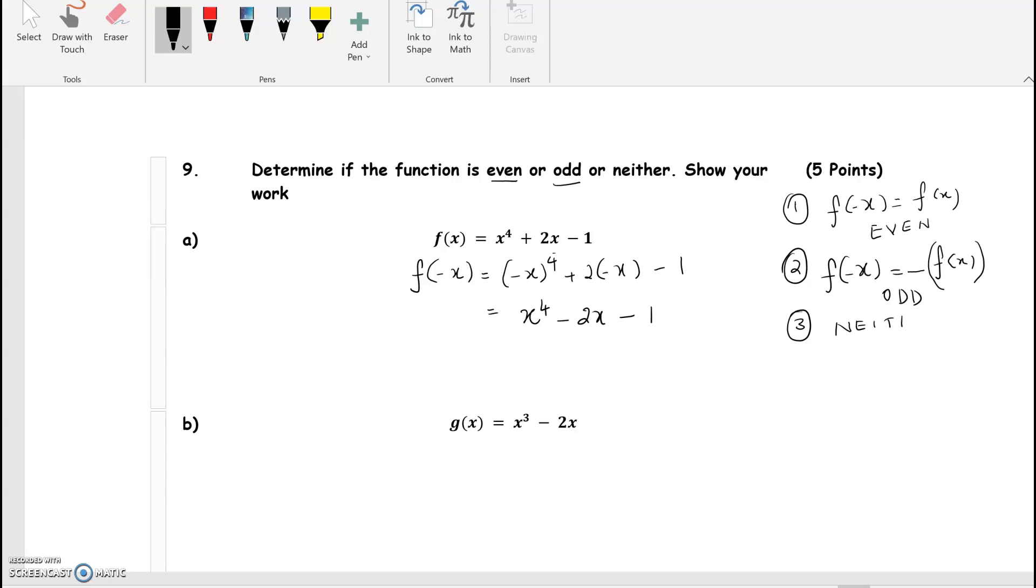So let's check. Definitely not even because the function has changed. So now let's check if it's odd. Let's factor out a negative 1 to get negative x to the fourth plus 2x plus 1.